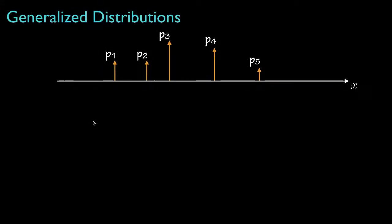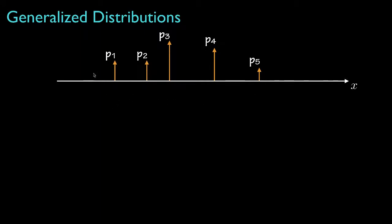Using the concept of the Dirac delta function, the probability density for a discrete random variable might look like this, where each arrow represents a Dirac delta function and the associated probability represents its area. If these five delta functions represent the entire density, then the sum of the associated probabilities would need to be equal to one.